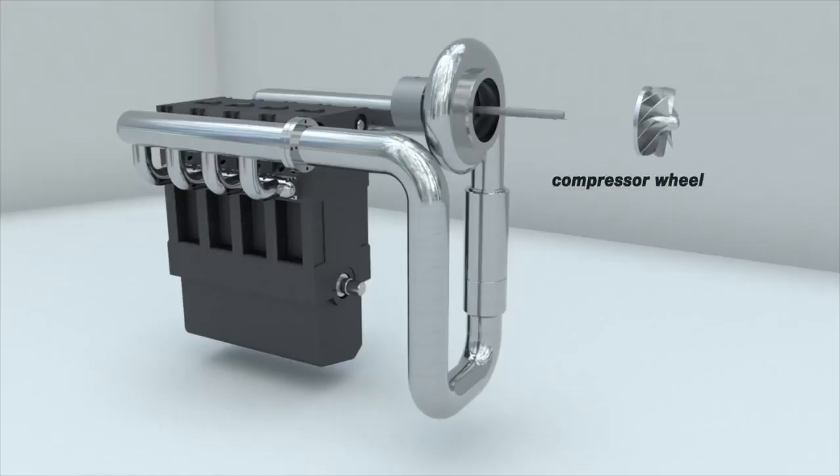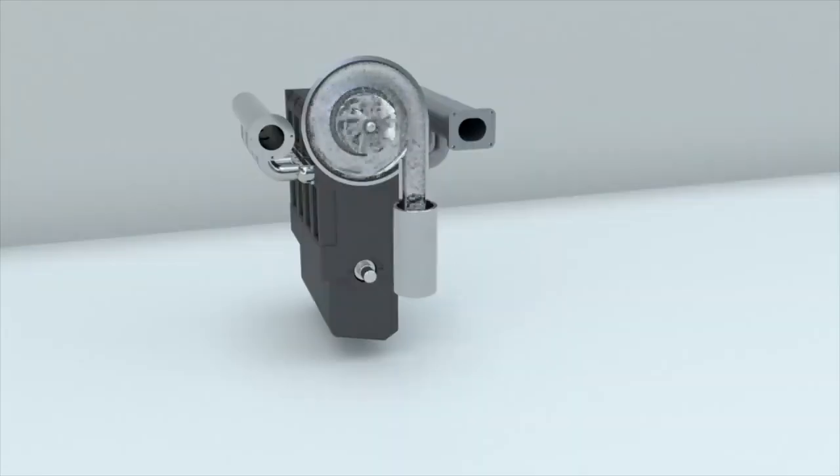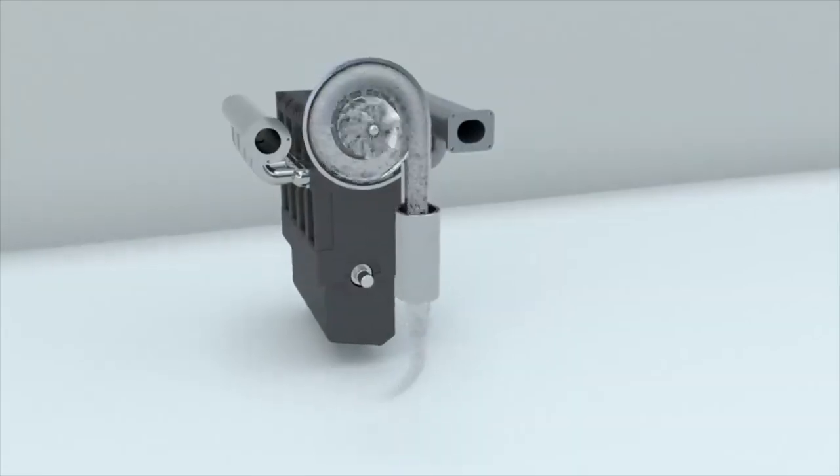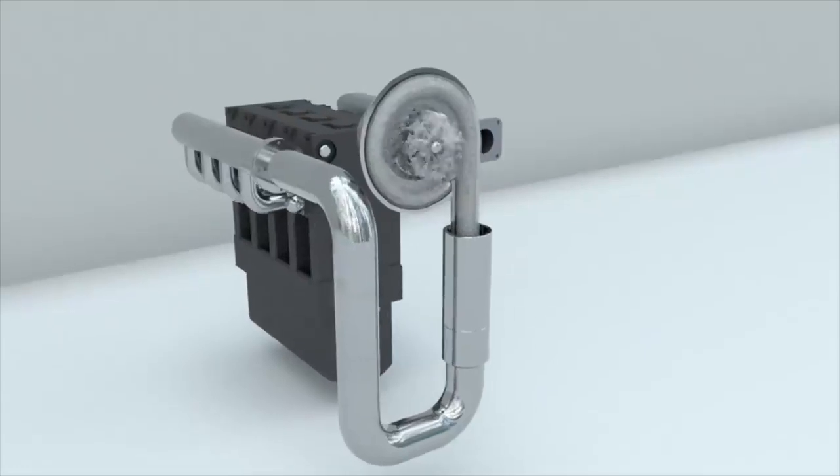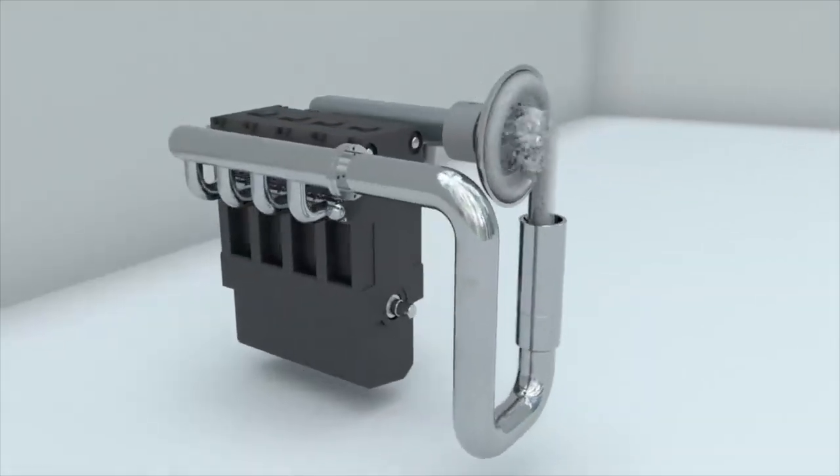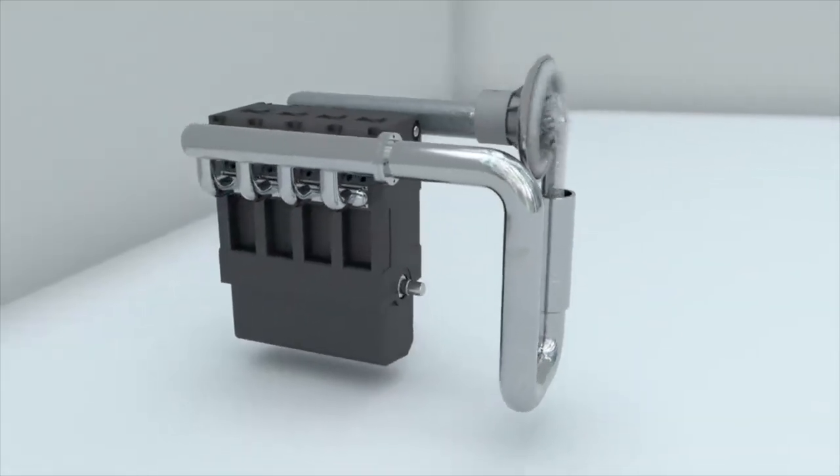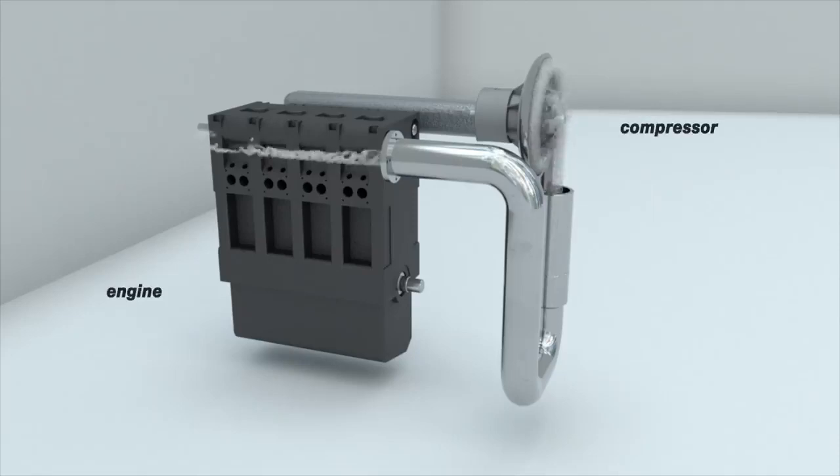An impeller is installed in the compressor. When rotating, the blades of the impeller force air to move. Air particles are pushed to the perimeter of the impeller and enter the volute, from where the compressed air flows out of the air outlet of the compressor and then moves on into the engine.